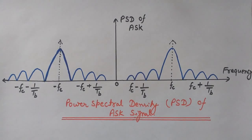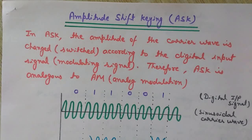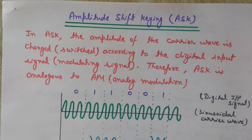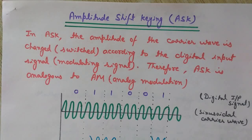Let's start with the concept of amplitude shift keying. ASK is a digital modulation technique. The basic difference between digital and analog modulation techniques is as follows: examples of digital modulation techniques are ASK, FSK (frequency shift keying), and PSK (phase shift keying), while analog modulation techniques include AM (amplitude modulation), FM (frequency modulation), and PM (phase modulation).